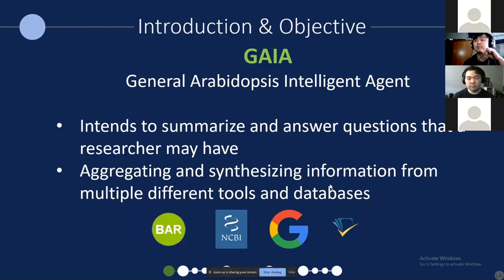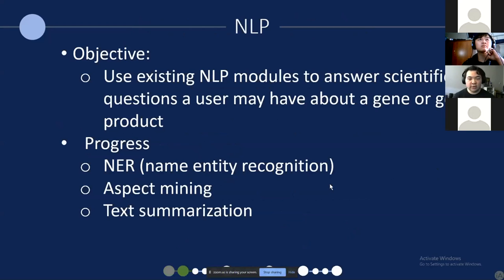Gaia works on two fundamental aspects. We use natural language processing, or NLP, to understand and answer a question. And then we use data aggregation, or data collection, to accumulate this information to answer that question. That's what I'm going to go over — how Gaia works and what Gaia is.